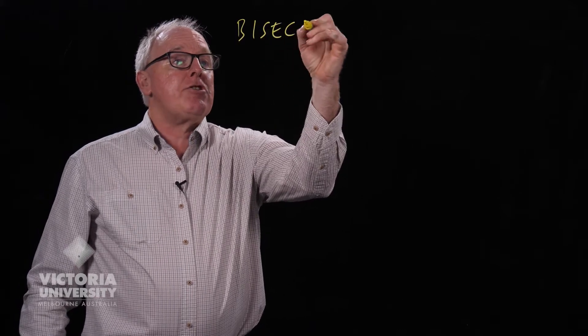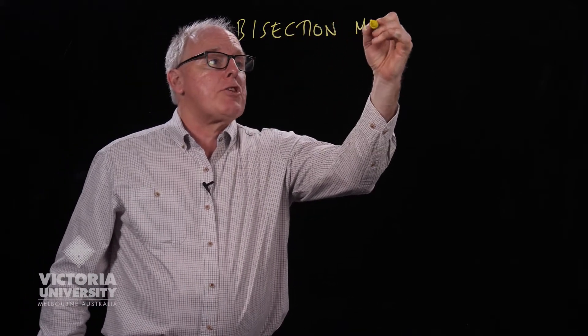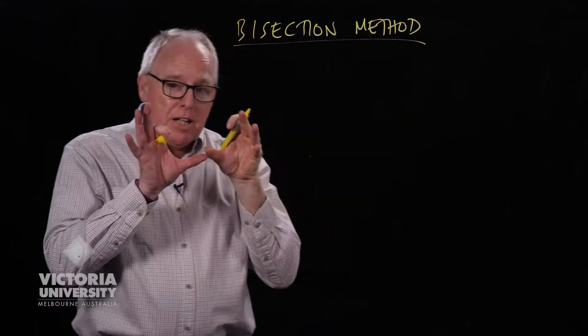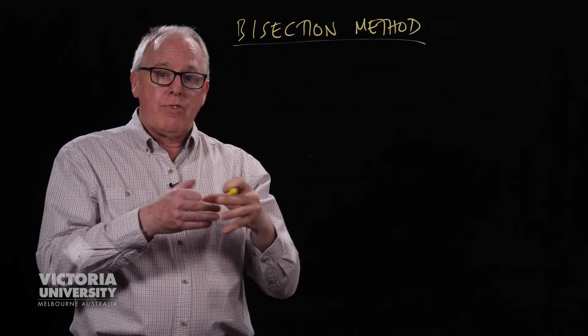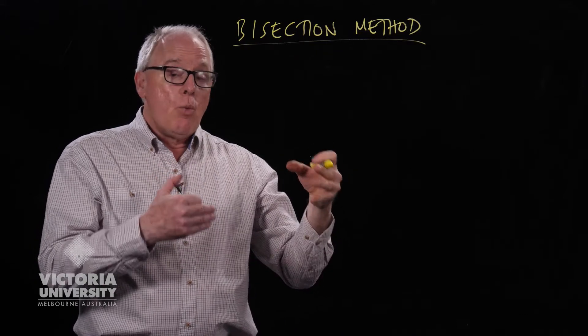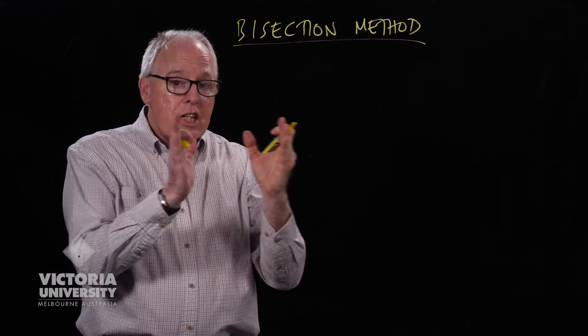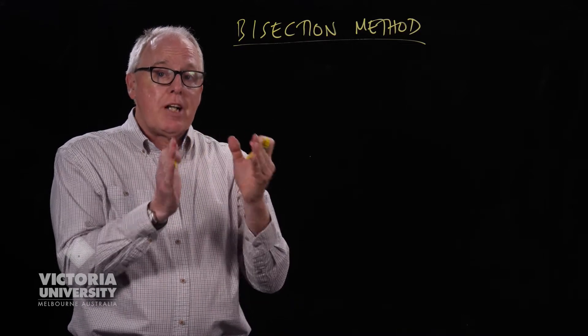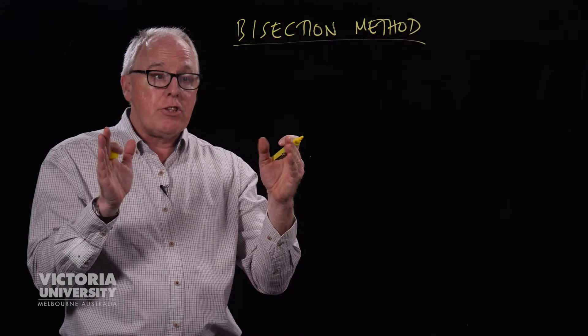We're going to look now at the bisection method for solving an equation. The bisection method differs from some of the other methods we've looked at in that it doesn't so much increase the accuracy of a solution. What it does rather is decrease the size of the region in which a root can be found. So it's one of a class of methods called bracketing methods.